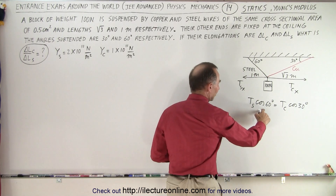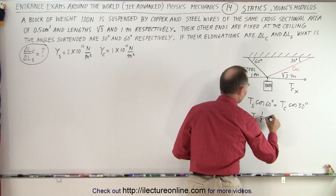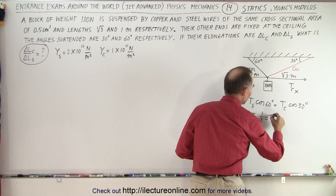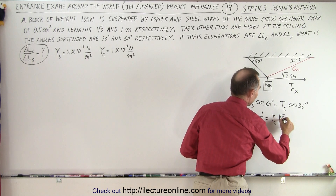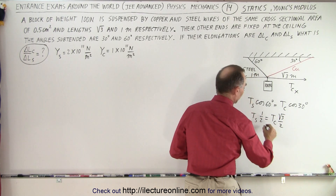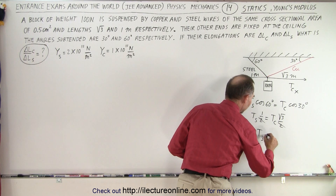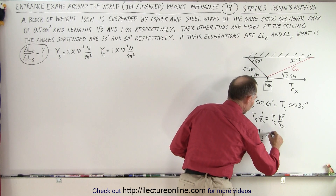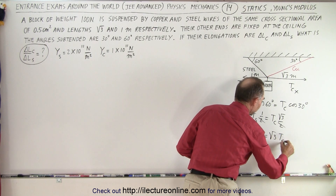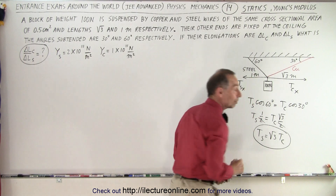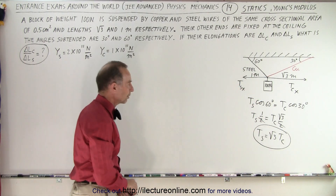The cosine of 60 is one half, so the tension of steel times one half equals the tension of the copper times the square root of three over two. The two can cancel out, so the tension of the steel is equal to the square root of three times the tension of the copper. So now we have a relationship between the tensions of the two wires.